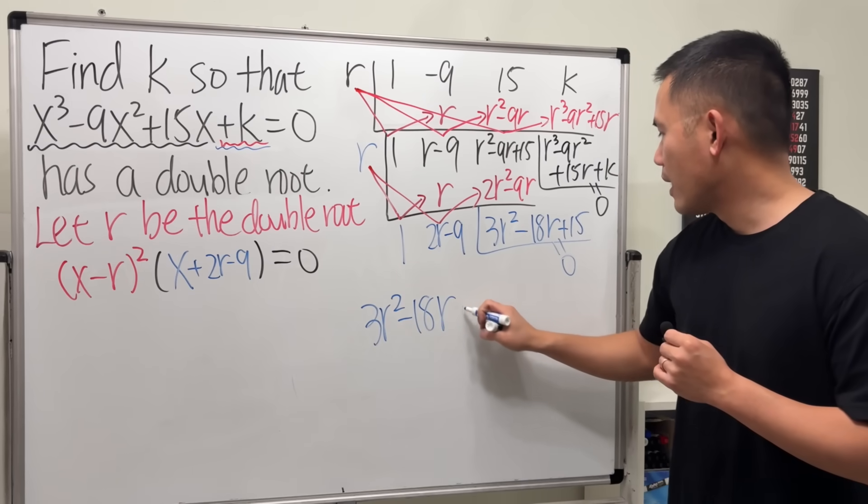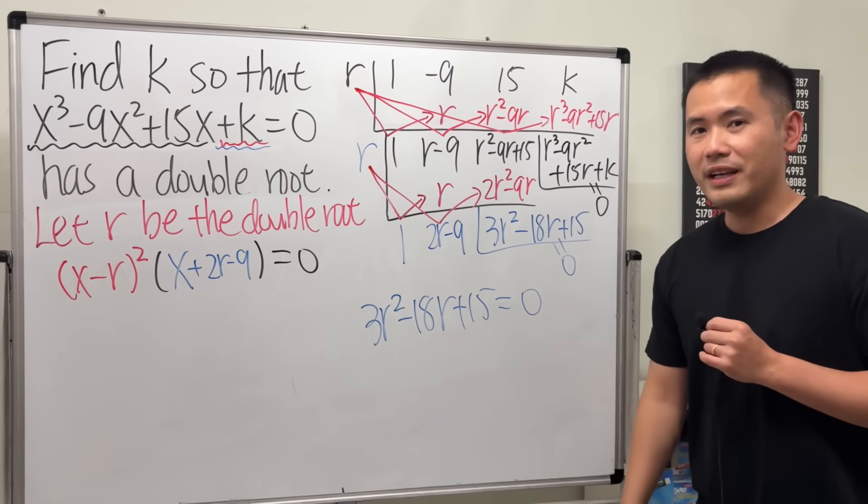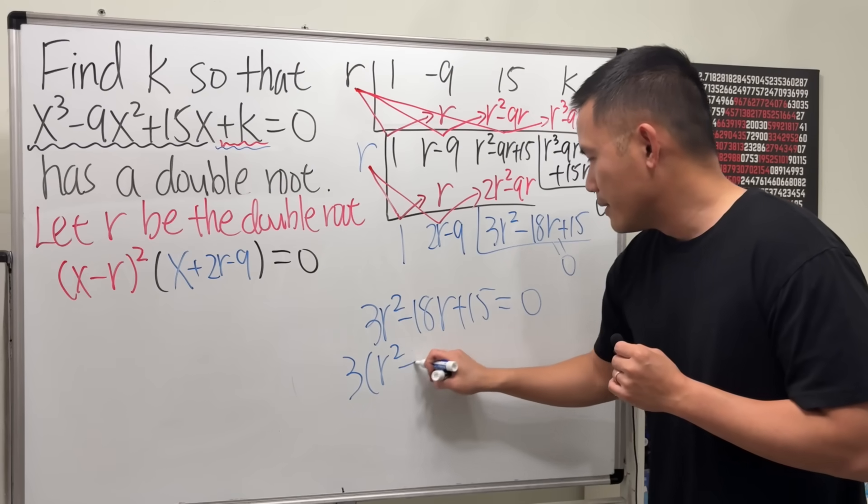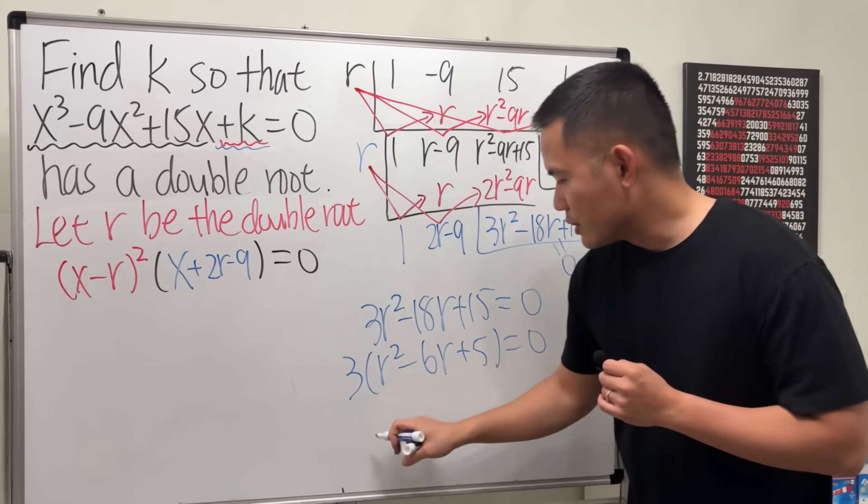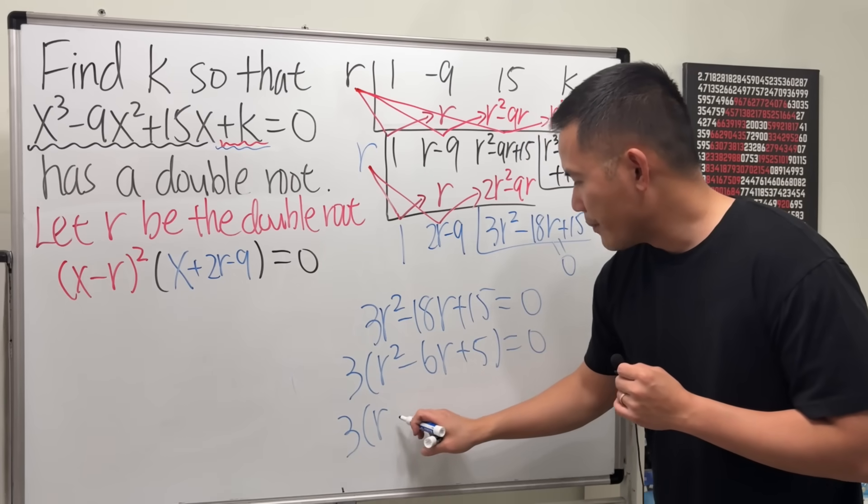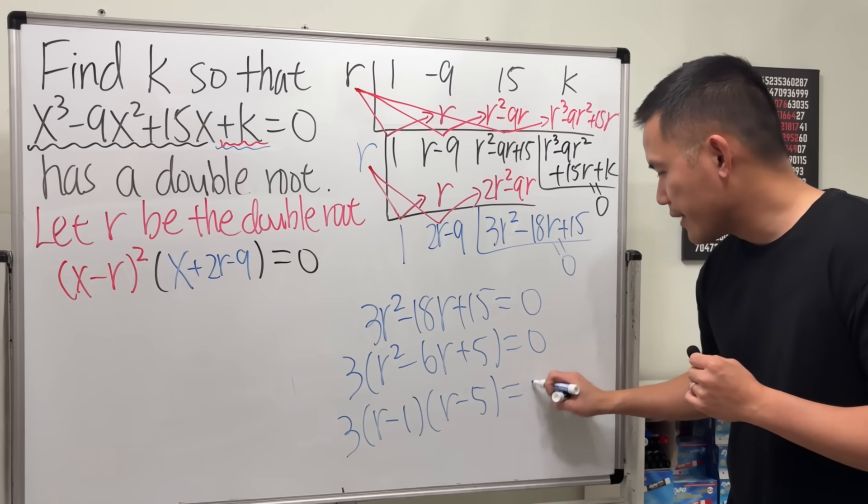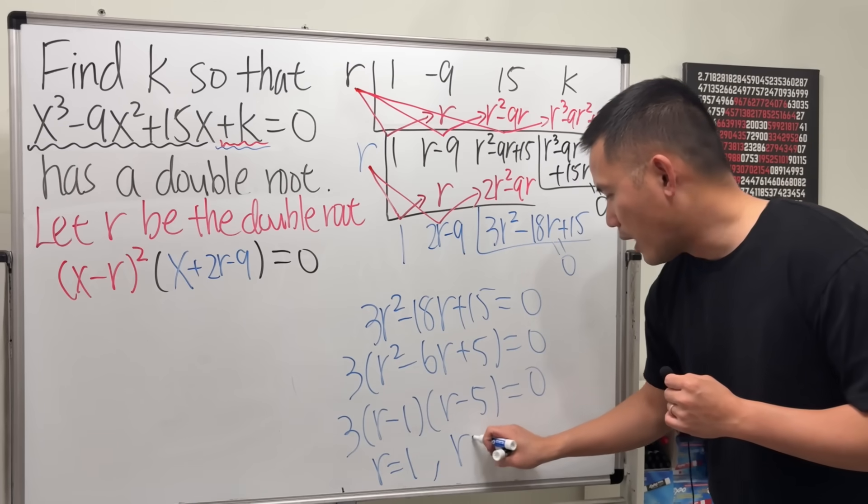Now here's the idea: we want to find r so that this is the double root. That means we better have this right here equal to zero. So if you look at this part, in fact 3r² - 18r + 15 = 0. We can solve this very nicely—factor out 3 first: r² - 6r + 5 = 0, and then just factor this again. We get (r - 1)(r - 5), so from here we know r = 1 or r = 5.